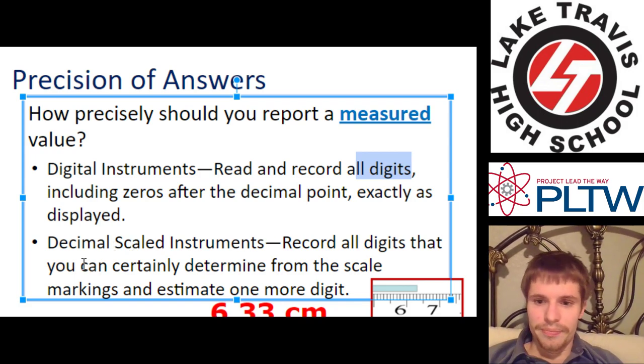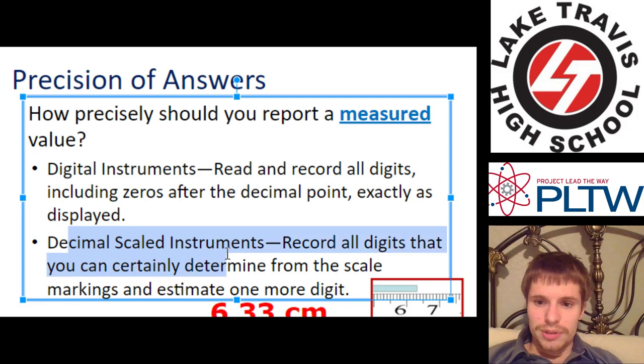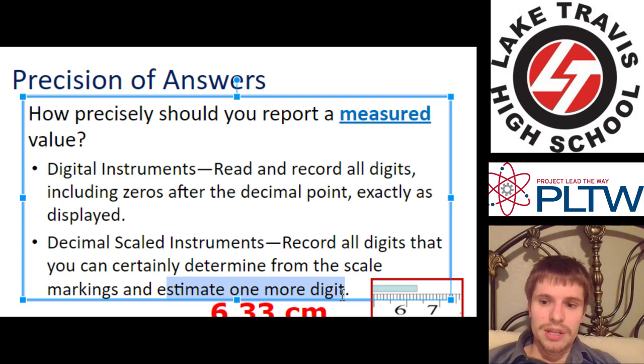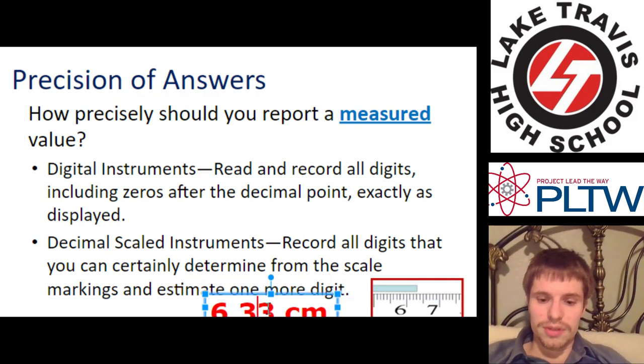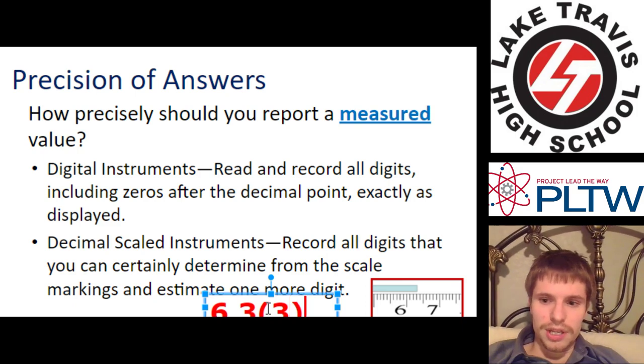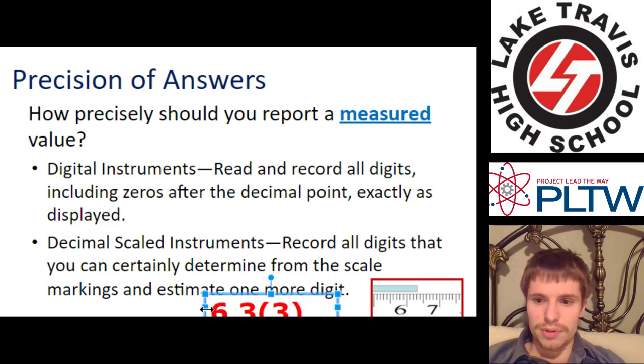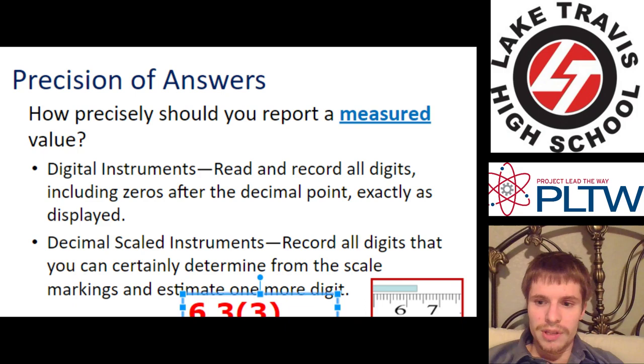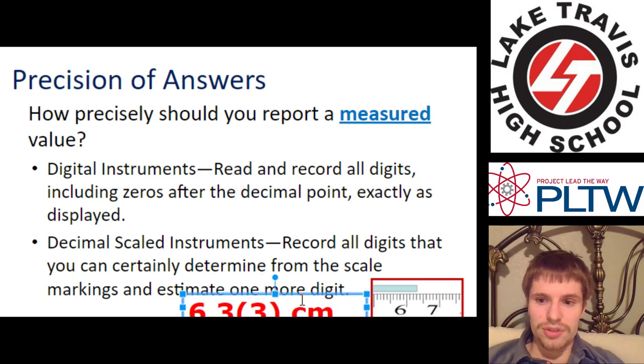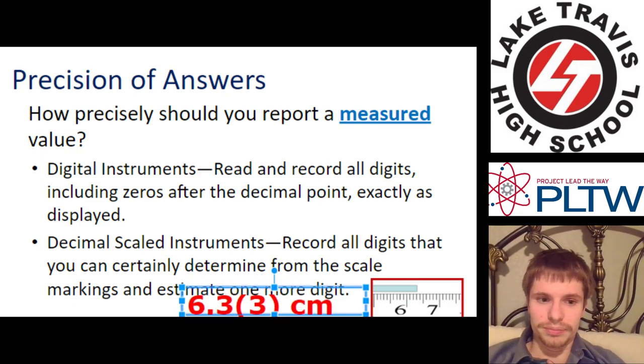If it's a decimal scaled instrument, you record all the digits, and then you estimate that one digit. And I prefer that you put that estimated digit in parentheses. So this guy right here, you can just put that right in parentheses, 6.3, parentheses 3. That tells me that that's an uncertain digit, the 6.33.